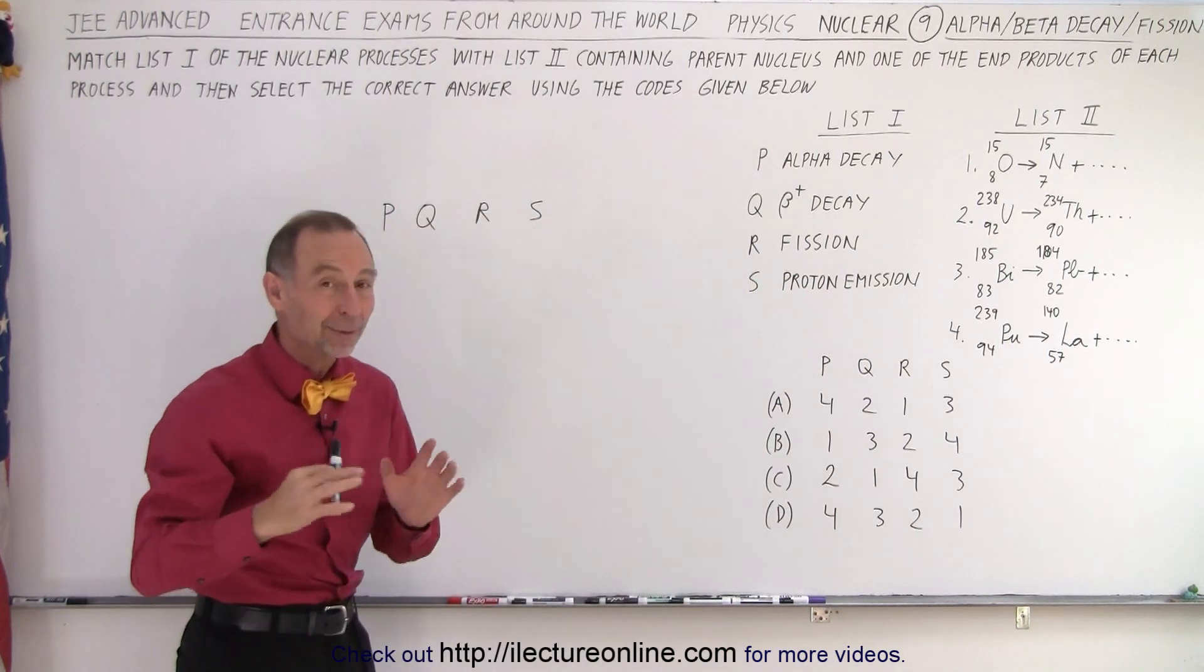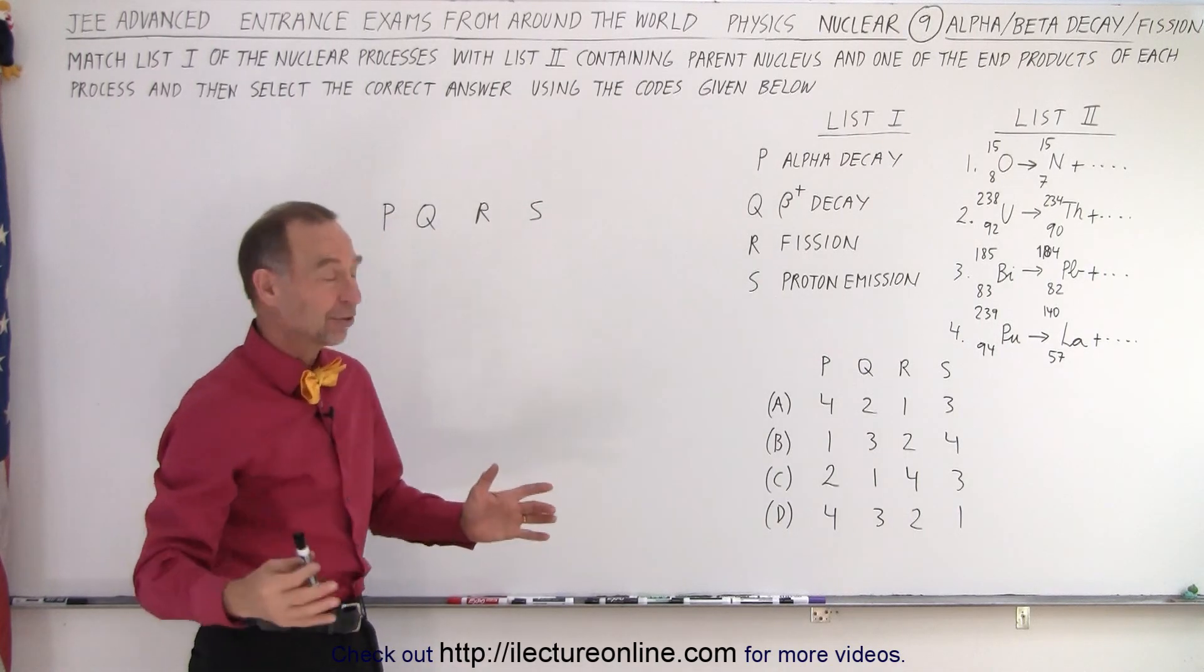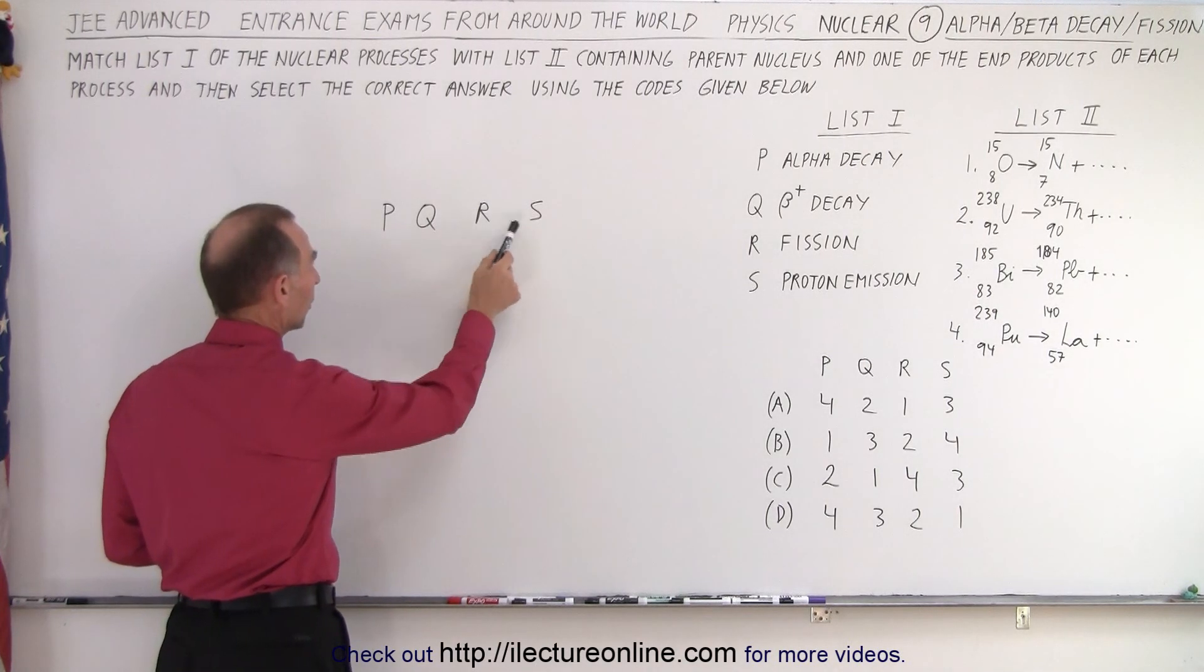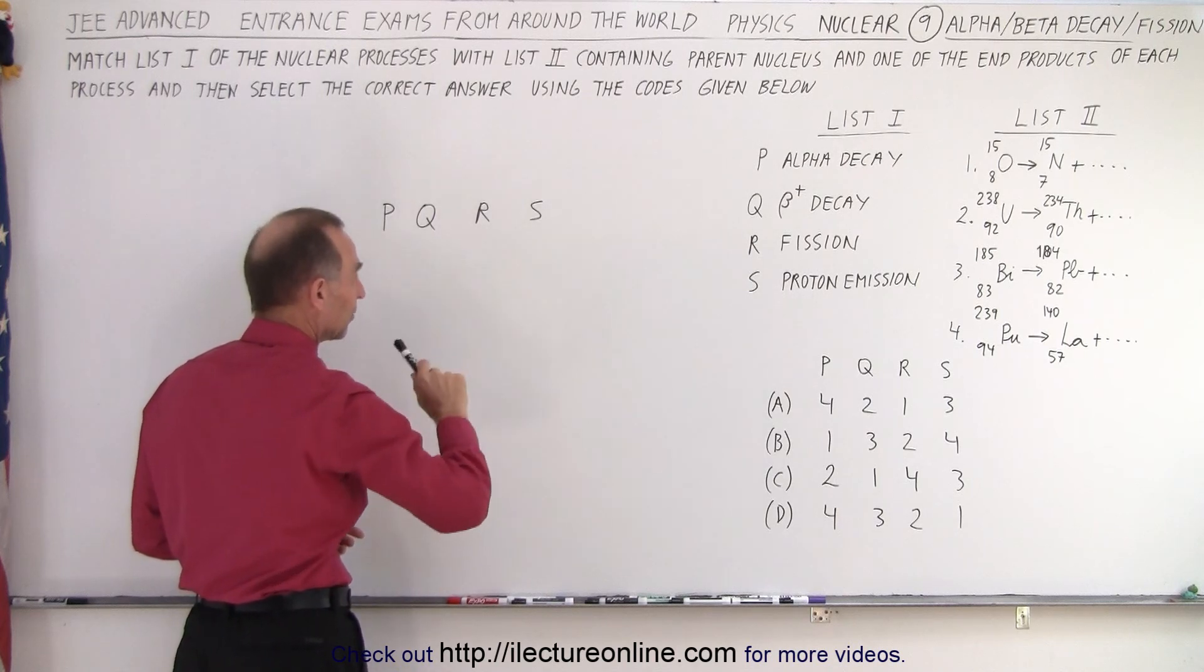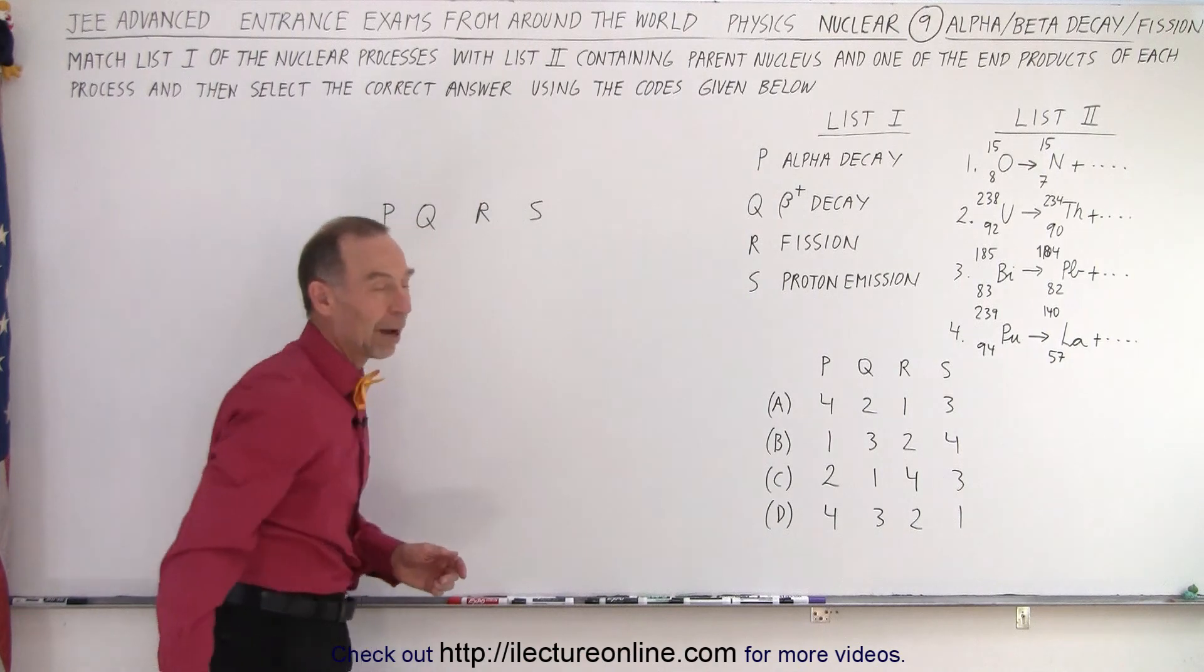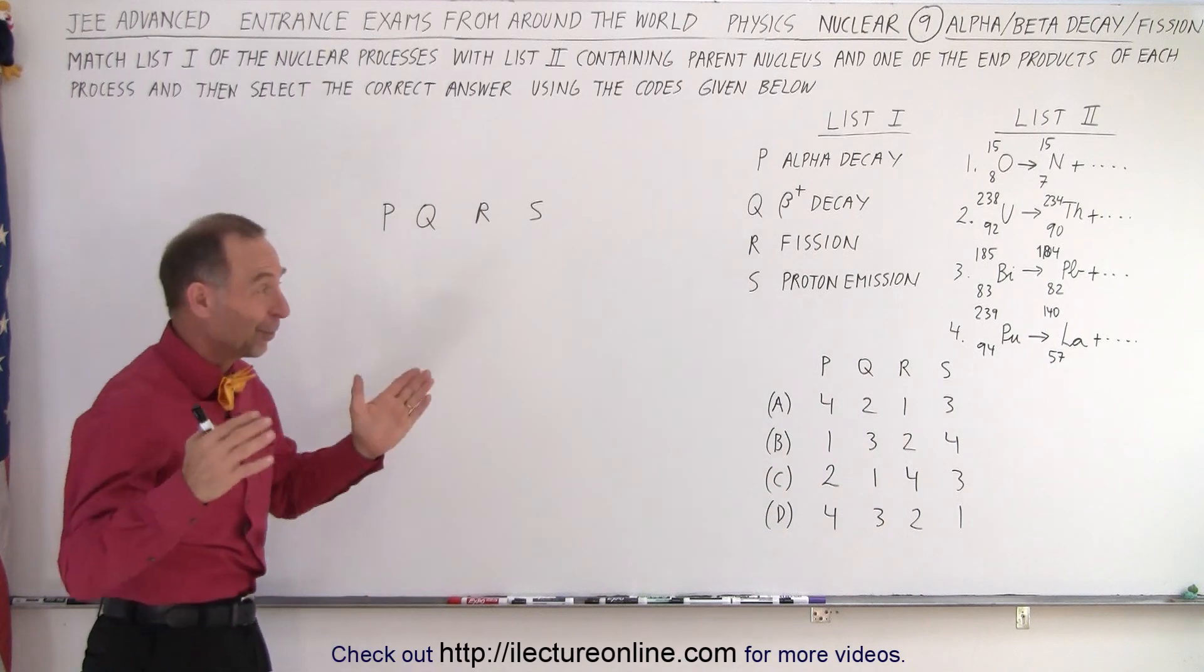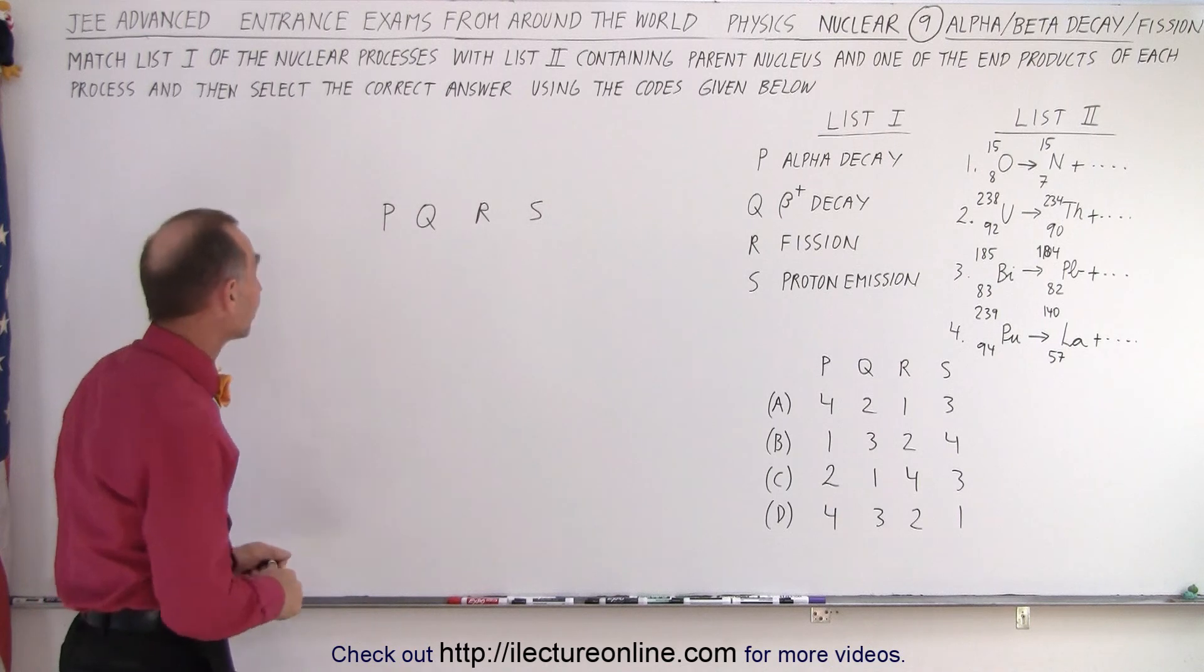Now, to me, what I found was the most confusing part is making sense out of this and trying to figure out how I should come up with the answers. But then finally I figured out all we have to do is put down P, Q, R, S for alpha decay, beta plus decay, fission and proton emission, and then put the right number here corresponding to the proper reaction and see how this list matches up with the correct answer here. For me, that was the most difficult part is to try to figure out how I should express my answers.